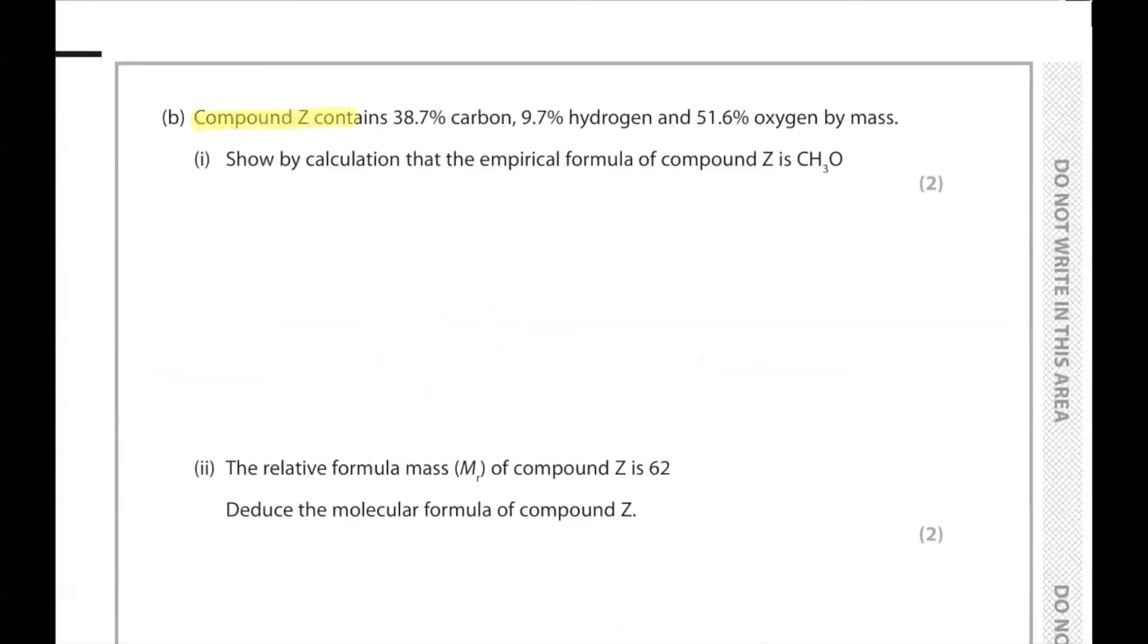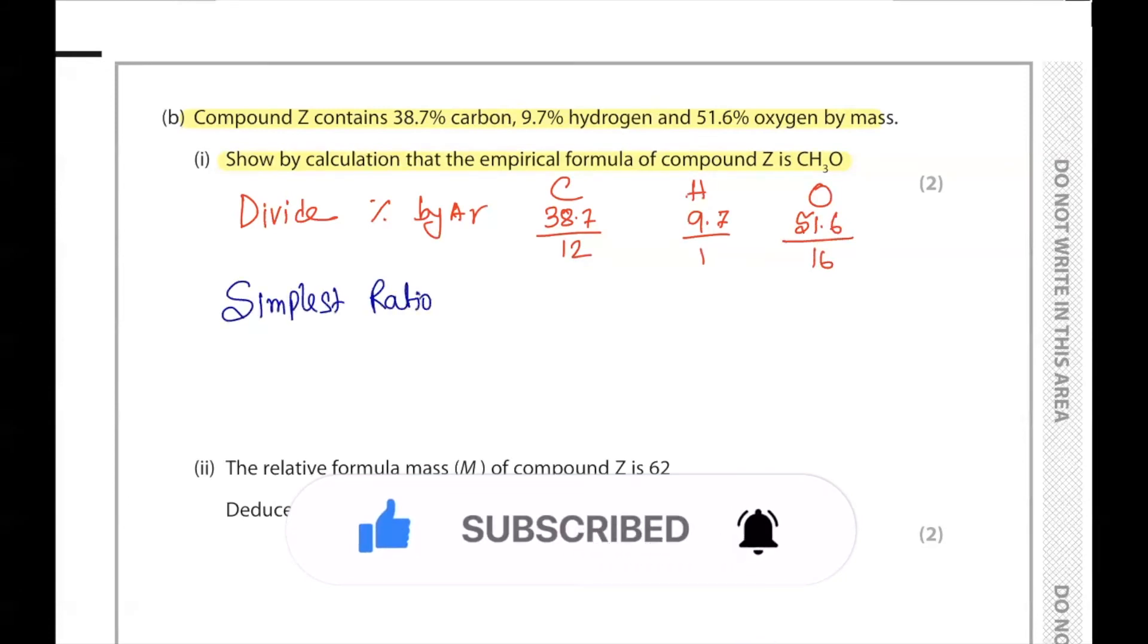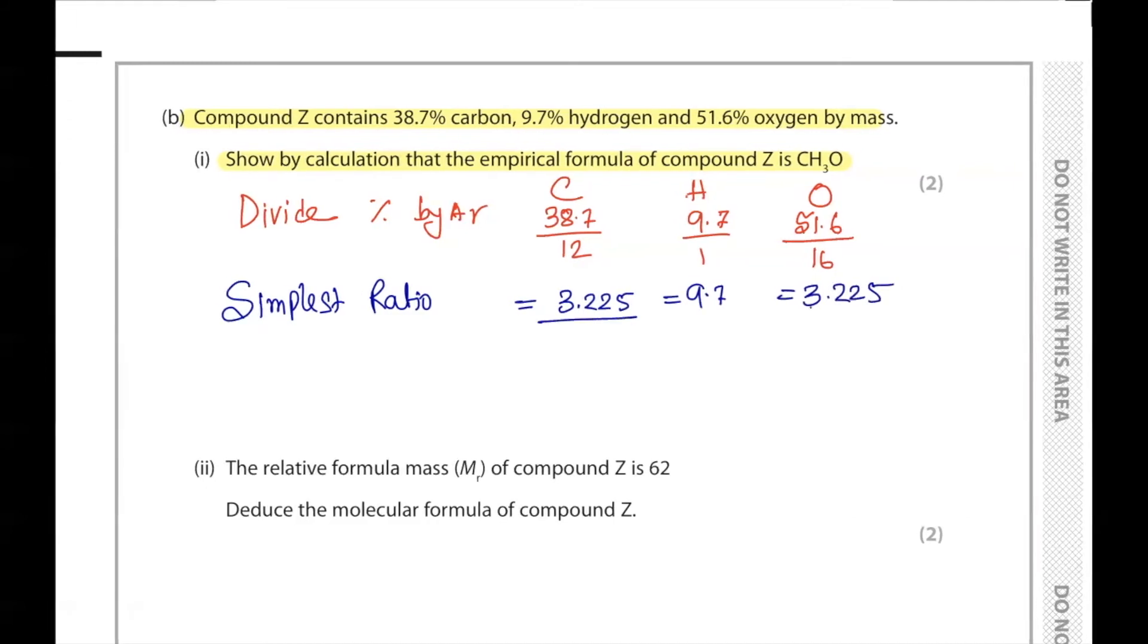Part B. Compound Z contains 38.7% carbon, 9.7% hydrogen, and 51.6% oxygen by mass. Show by calculation the empirical formula of compound Z is CH3O. The first thing we're going to do is divide percentage by AR. The next step is finding the simplest ratio. To find the simplest ratio, we'll divide by the smallest number that we obtained from all of these results. So 3.225 is the smallest, so we divide everyone by 3.225.